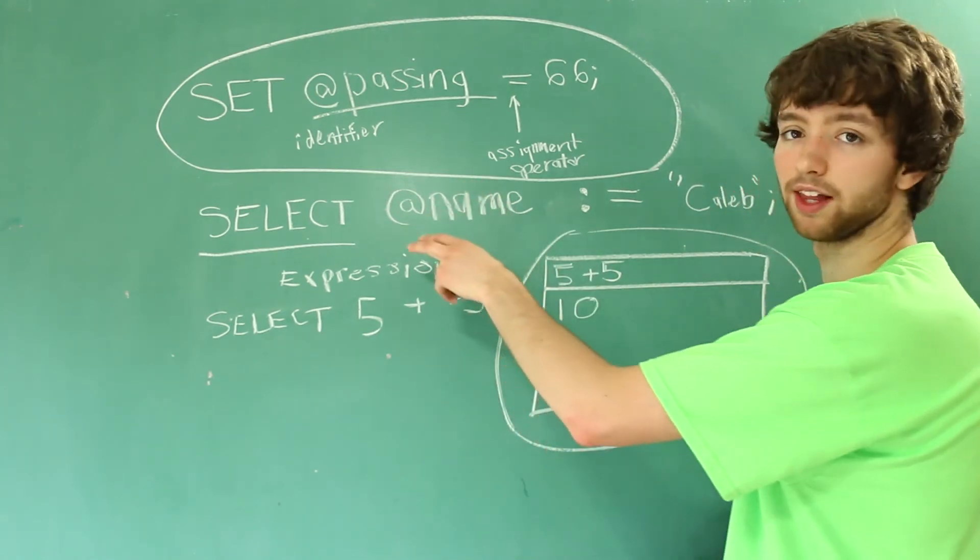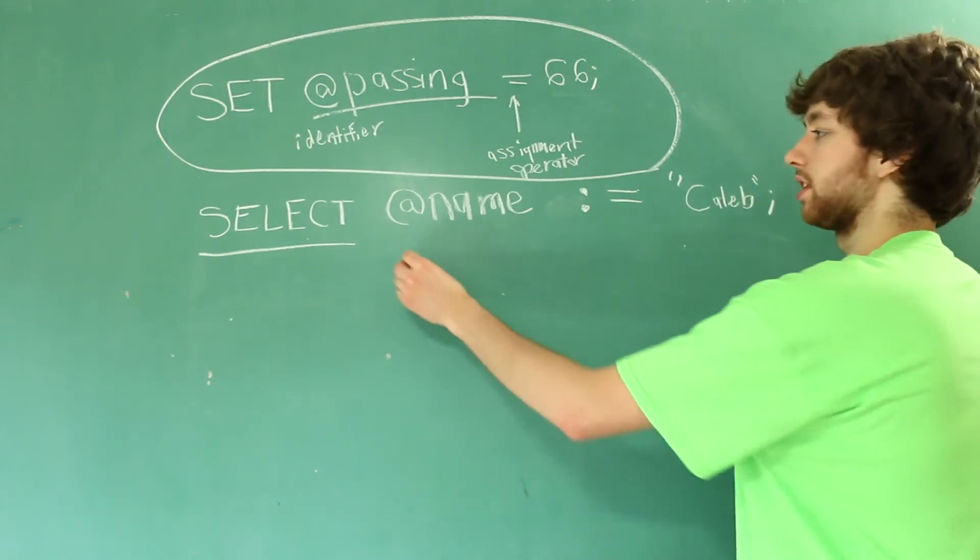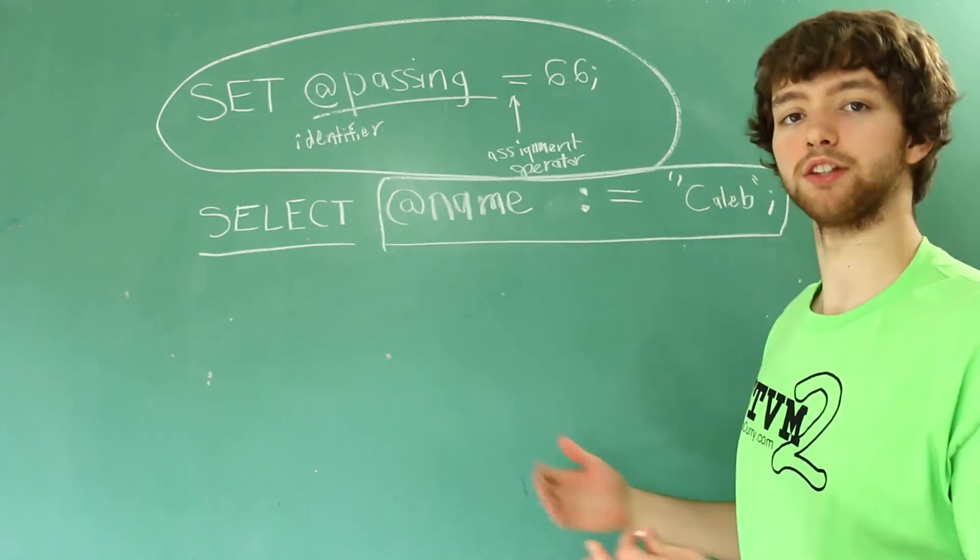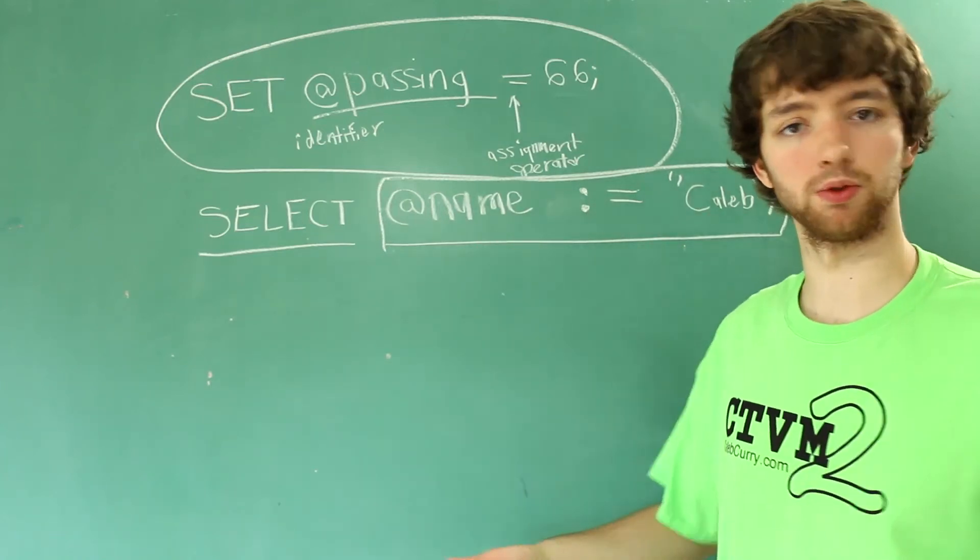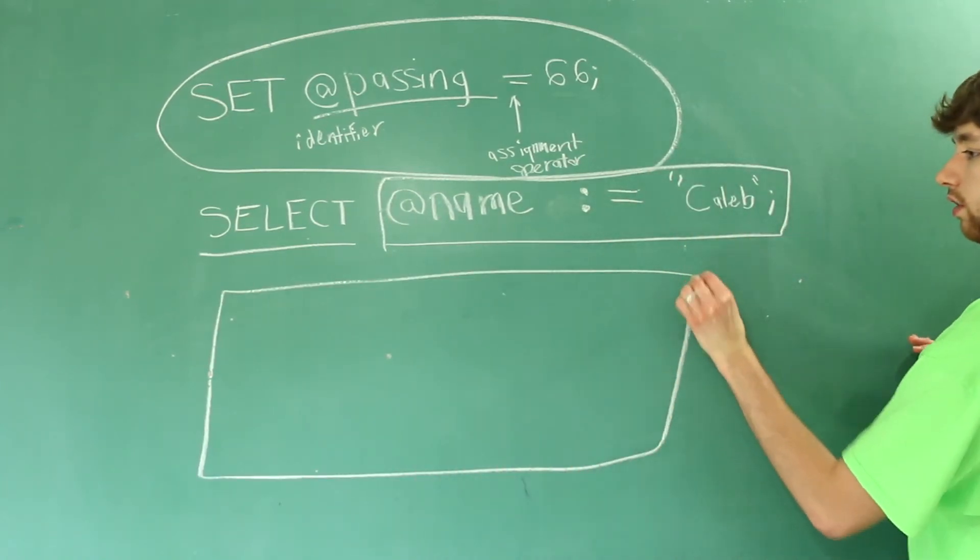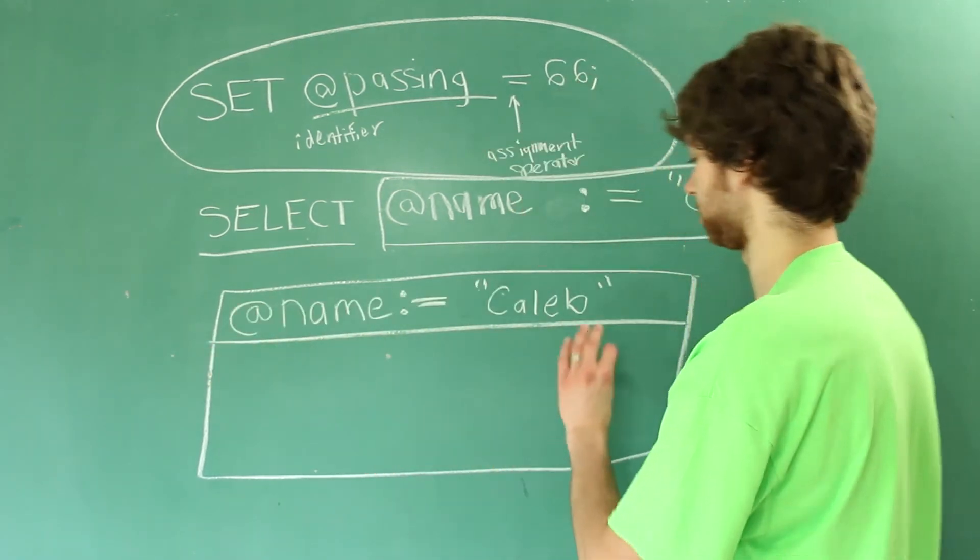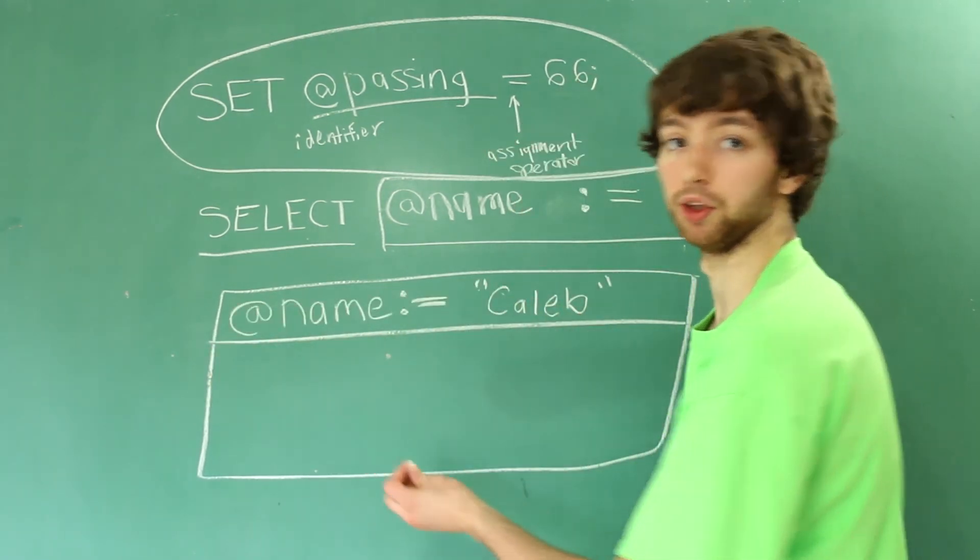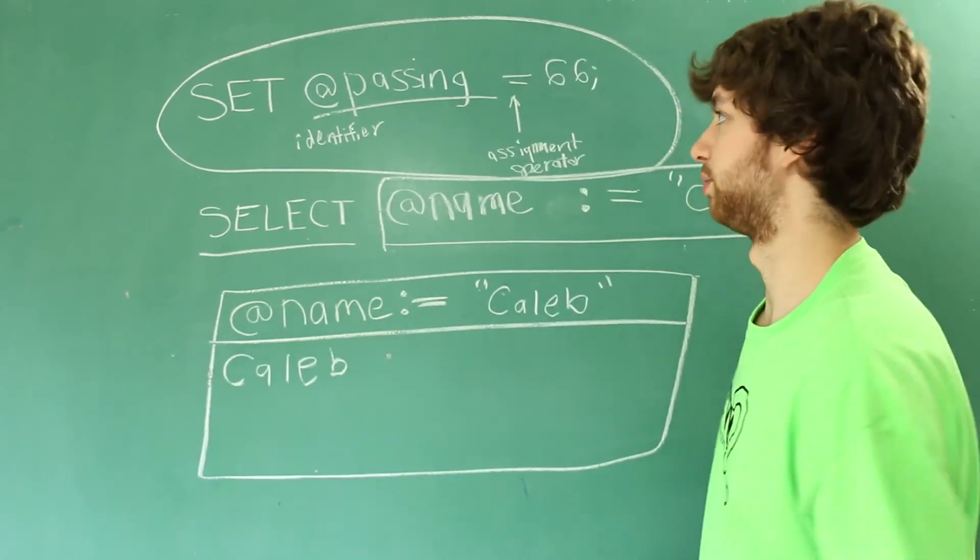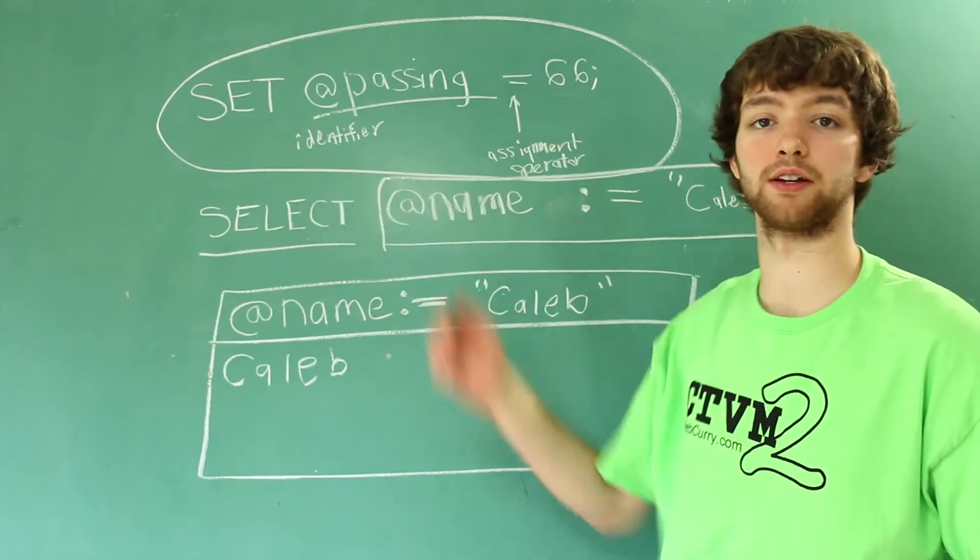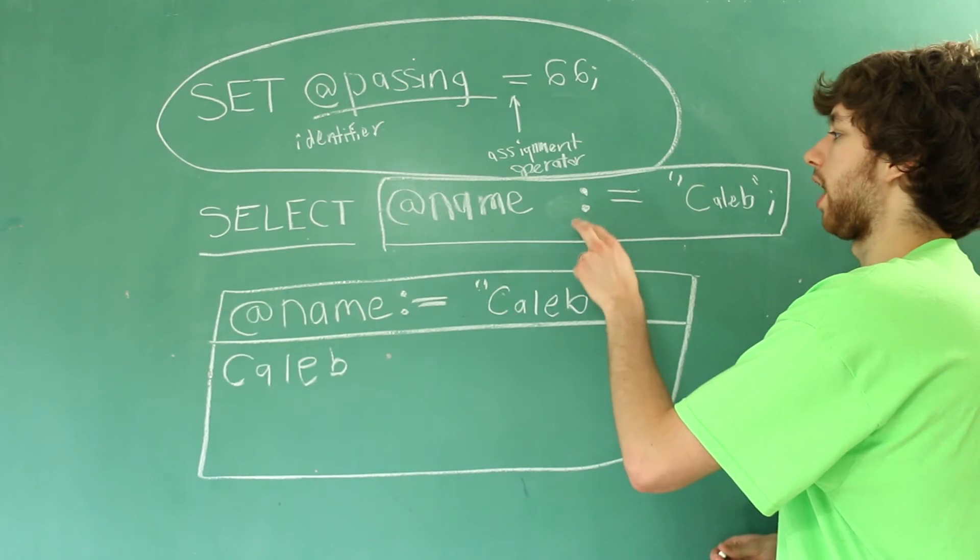A very similar thing happens when we use the select command to create a variable. When we run this command it's going to take this, it's going to put it as the header of that column in that result table, and then the result is going to be whatever the value of the variable is. So that's one of the big differences between using the set and the select command to create variables.